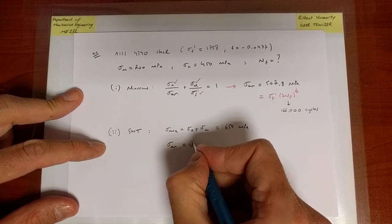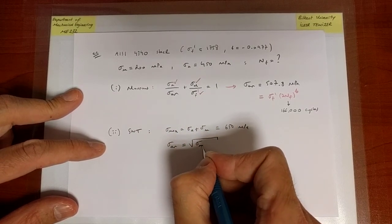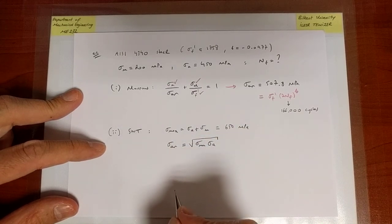And SWT just realizes that somehow we take sigma a and sigma m and map them to a sigma ar value. In this case, that map is going to be simply square root sigma max sigma a.